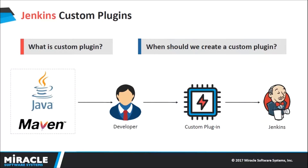What is a custom plugin? A plugin is a source for which we can specify our requirements on how our application should be built and deployed. There are several plugins available in Jenkins to specify our requirements. But at some times, all those plugins might not satisfy our requirements even after making a few changes to existing plugins. In such situations, we can develop our own plugins.